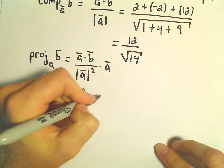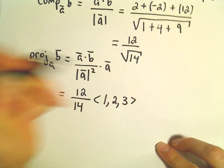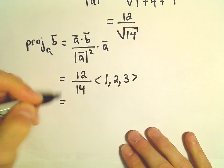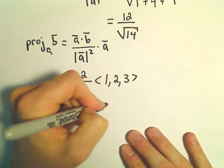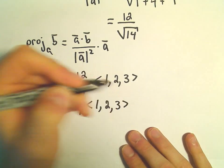So, vector A had components 1, 2, 3. Well, let's see, I guess this reduces to 6 over 7, and we're just going to multiply. So, recall, when you have a constant out front, we just multiply each component by that number.